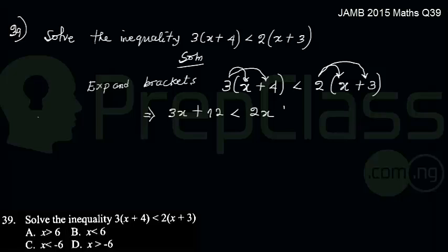So now I will be arranging the terms. I would have 2x coming over here and 12 going over in the other direction. So I will have 3x, 2x coming over, I will have minus 2x, the less than sign.